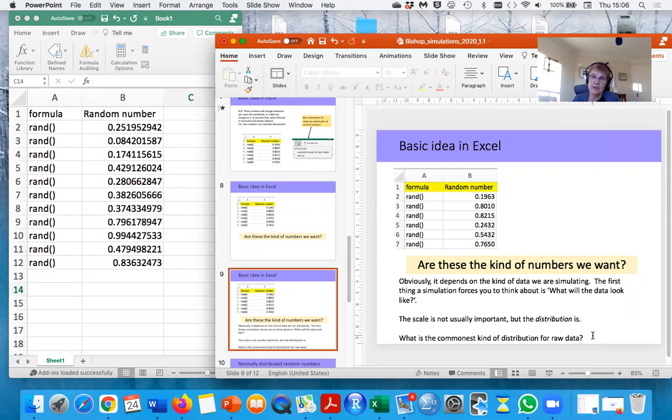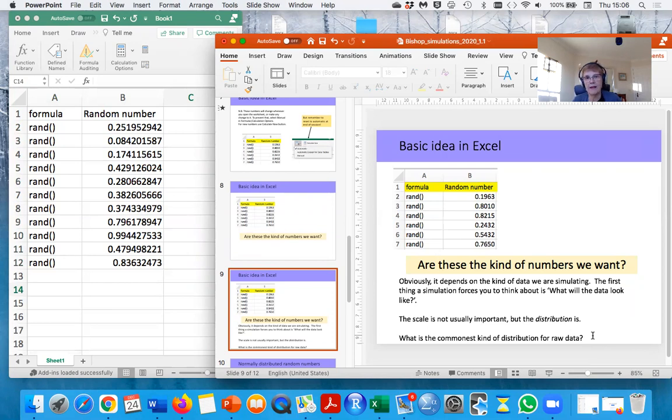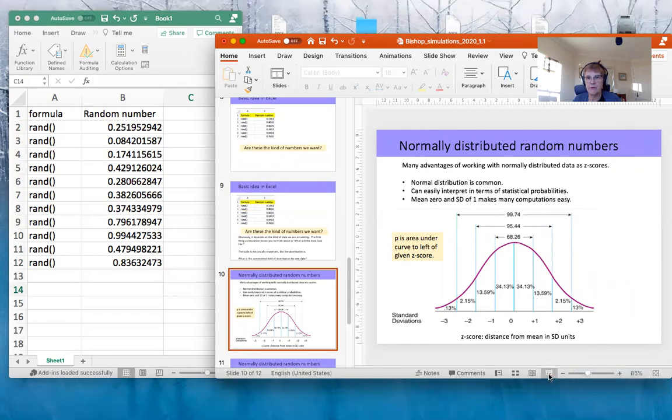It's normally distributed data, and this is usually because whenever you've got multiple influences on any kind of process, things cancel each other out and you end up with something more like a normal distribution, which you can see here. And there are many advantages if you're simulating data of working with normally distributed data.